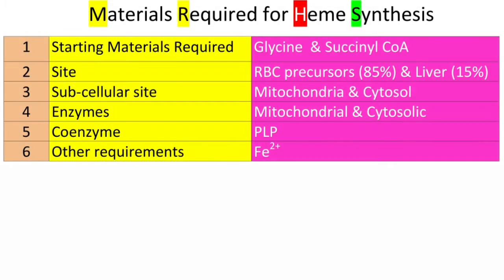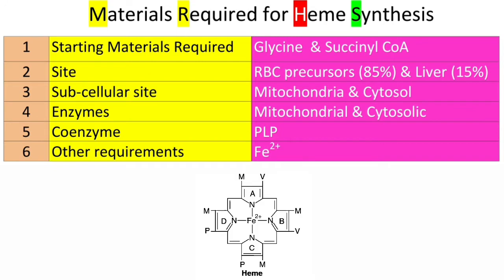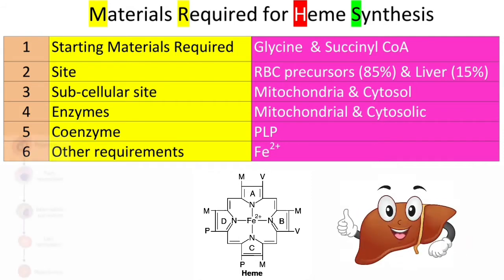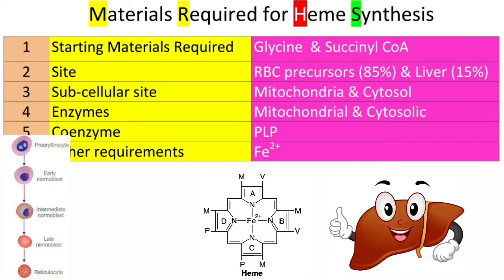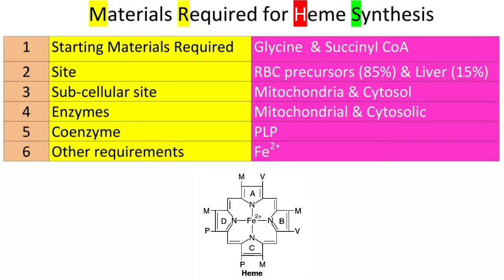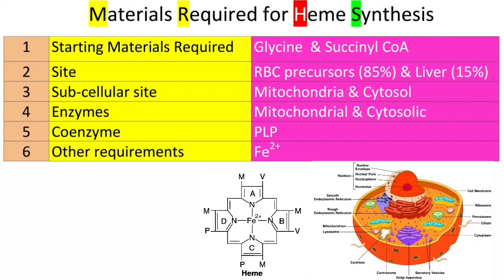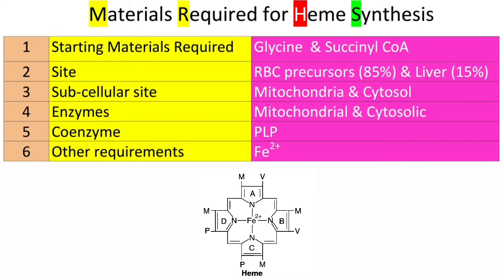Heme synthesis starts with two simple precursors: glycine and succinyl-CoA. The two major sites of heme synthesis are RBC precursors and liver. Within the cell, heme synthesis takes place in the cytoplasm and partly in the mitochondria, because of the distribution of enzymes in the cytoplasm and mitochondria.